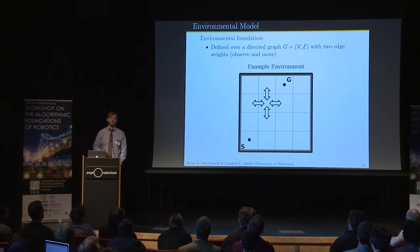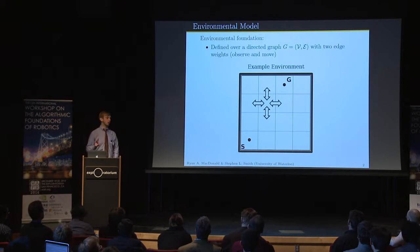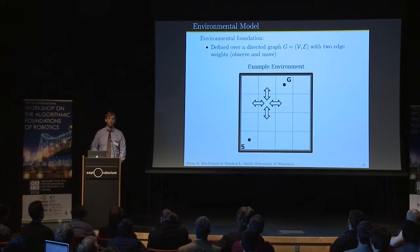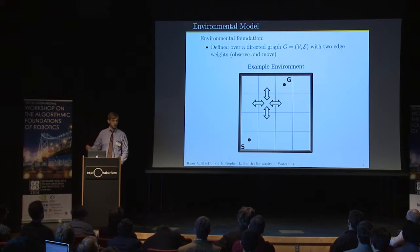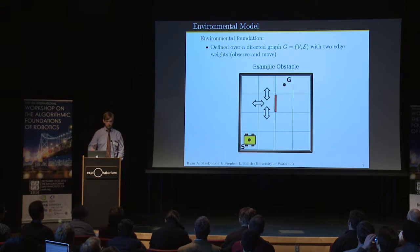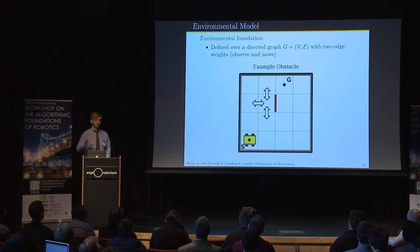Our environment is formulated over a directed graph. We have two edge weights: an edge weight to move and an edge weight to observe. Throughout this talk, we'll be using a grid world where the robot can move and observe up, down, left, and right. We'll model obstructions using a little red bar with a black border, and the robot can't traverse over an obstruction.